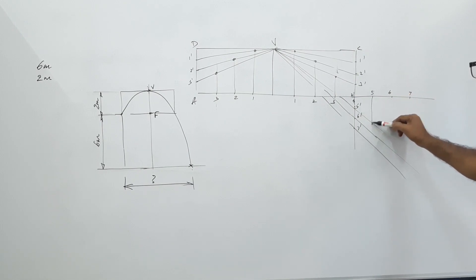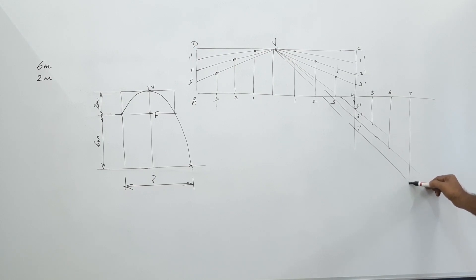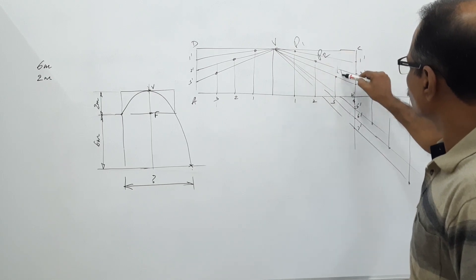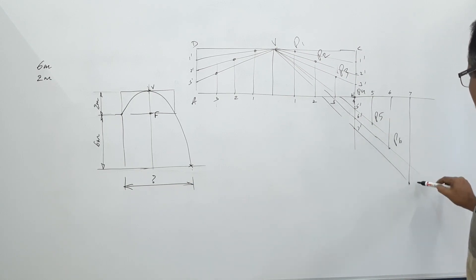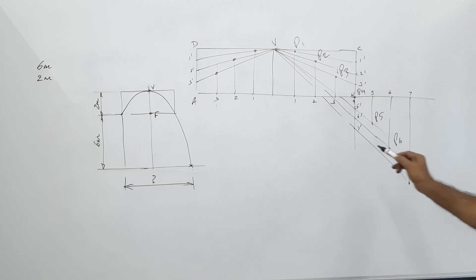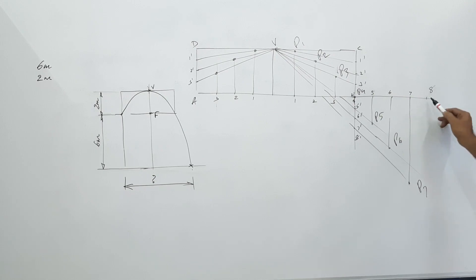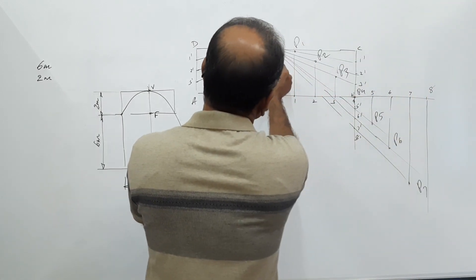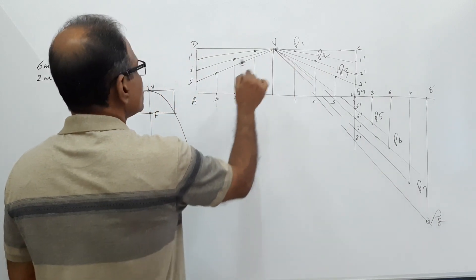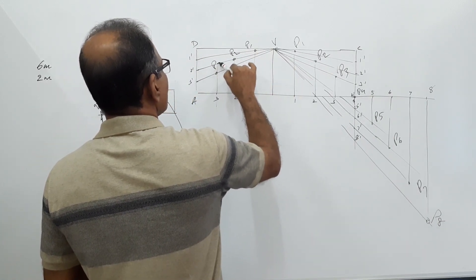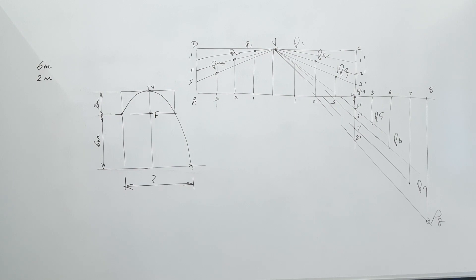Draw vertical lines through points 5, 6, 7 to get p5, p6, p7. Similarly p1, p2, p3 — this automatically gives p4. You may also drop a vertical line at point eight to get p8. Label points p1, p2, p3 and connect all these points by a smooth curve.